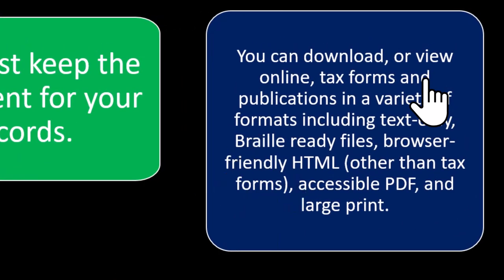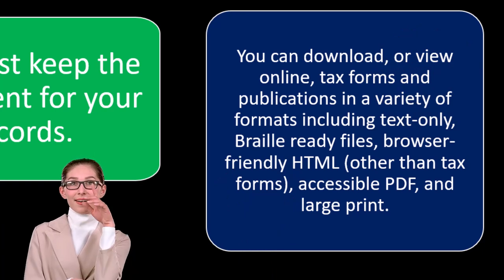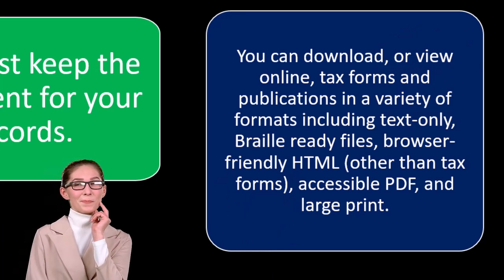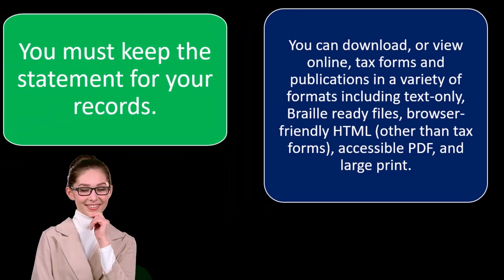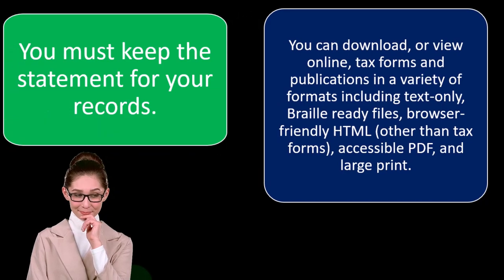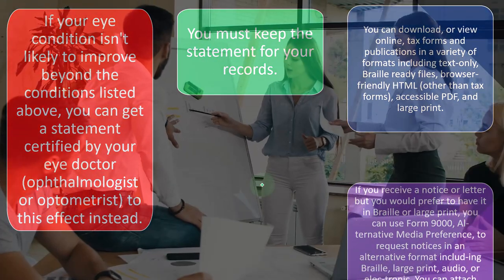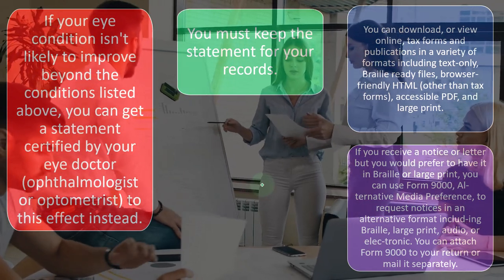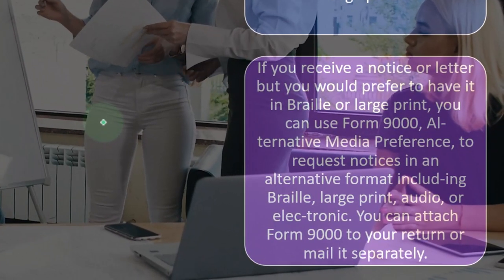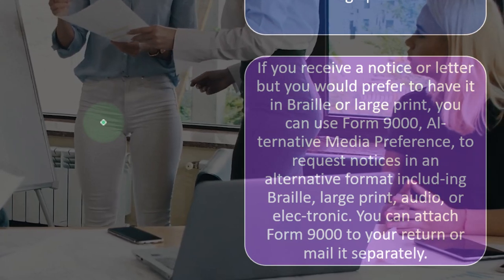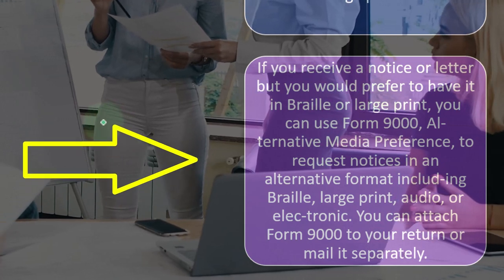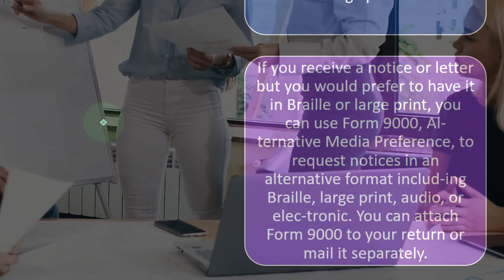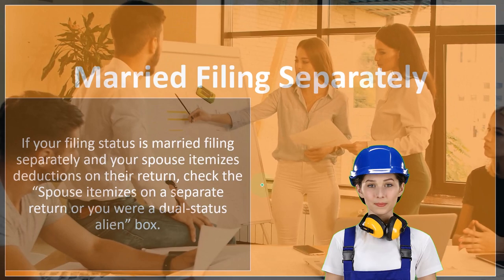You can download or view online tax forms and publications in a variety of formats, including text only, braille-ready files, and browser-friendly HTML. The IRS tries to get their documentation in formats that accommodate different individuals, including blind individuals or people with visual impairments. If you receive a notice or letter but prefer braille or large print, you can use Form 9000, Alternative Media Preference, to request notices in an alternative format.